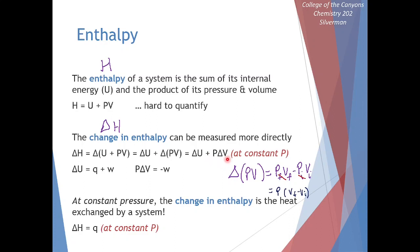This pressure times change in volume is our definition of work for pressure-volume systems, like pistons, where we can have a change in volume due to a change in pressure. If our volume is expanding, our system is doing work on the surroundings, so we have a negative sign here. This is our definition of pressure-volume work, keeping our sign convention: W = −PΔV.